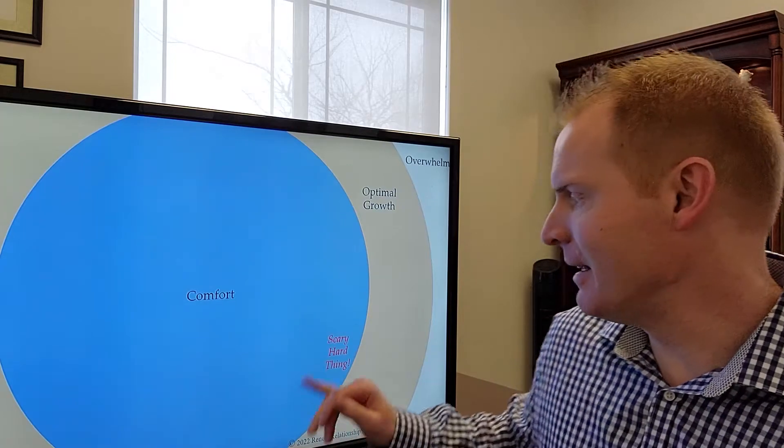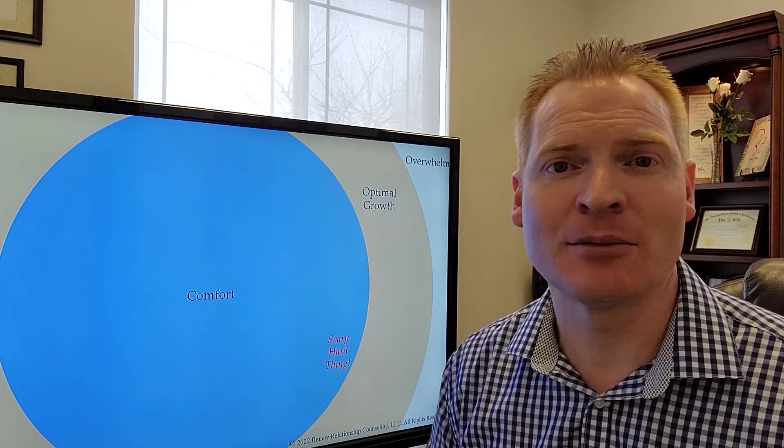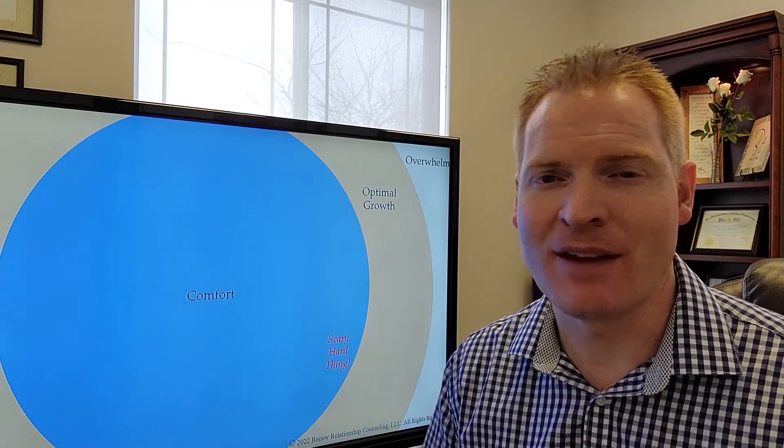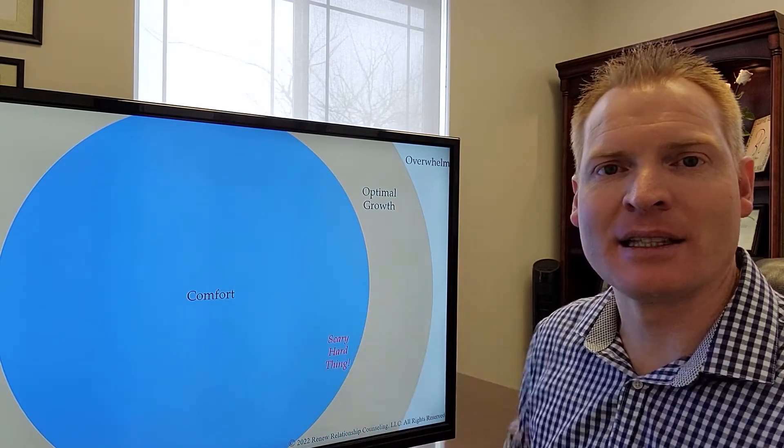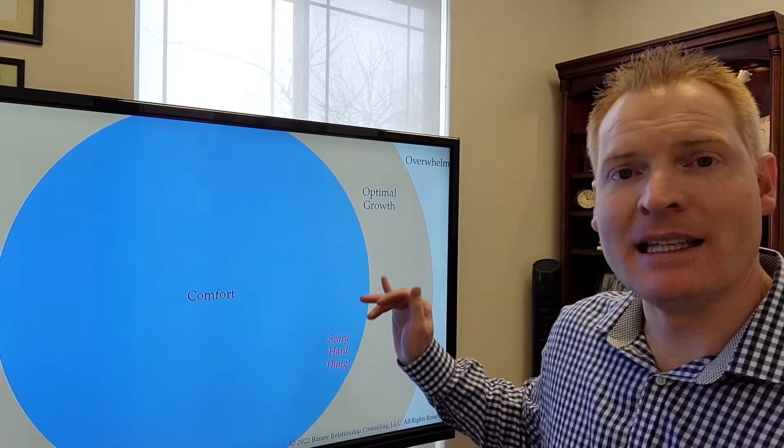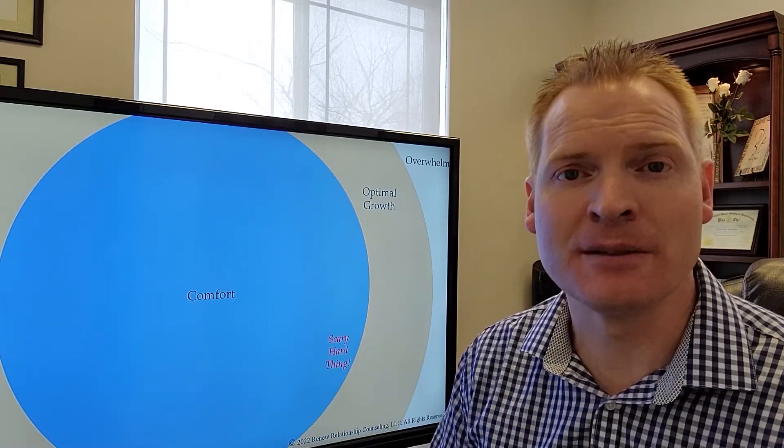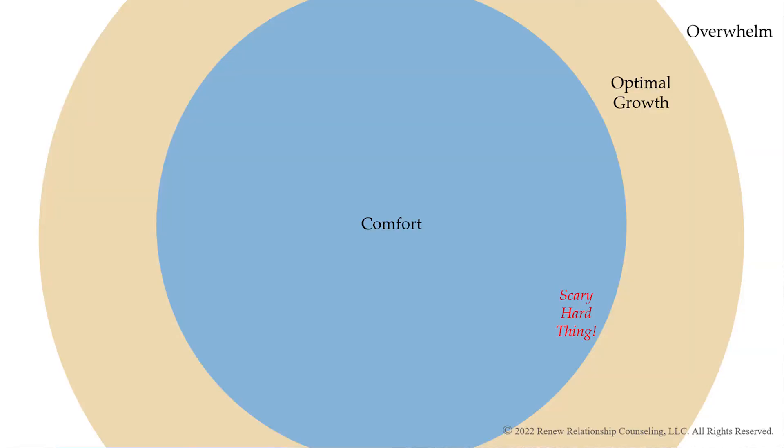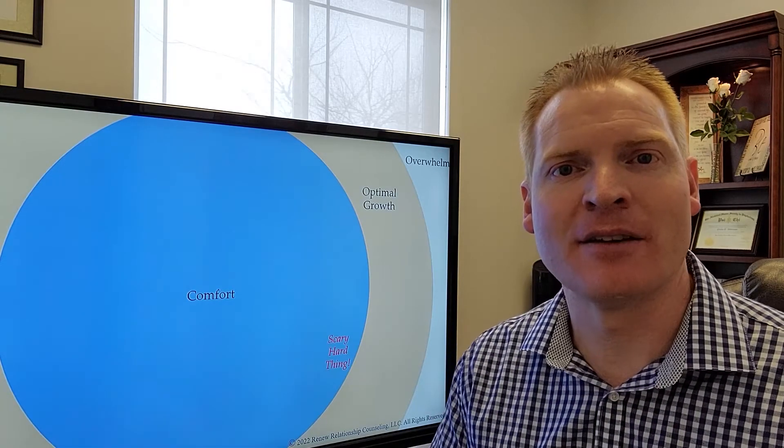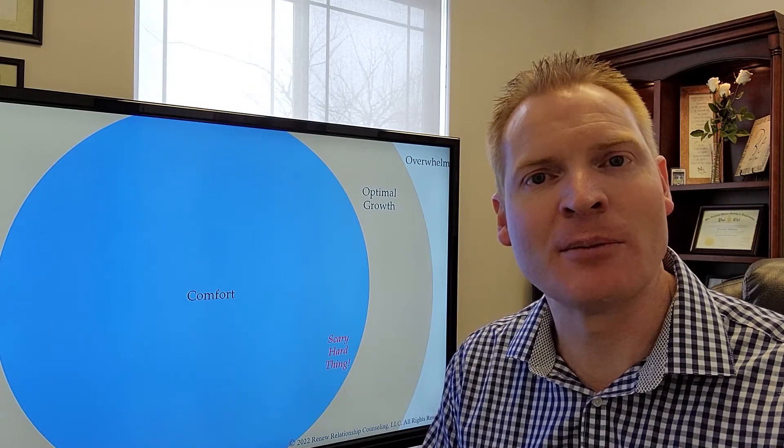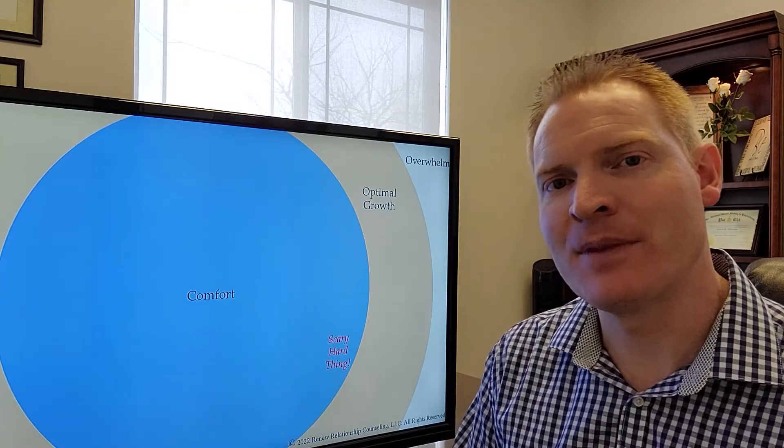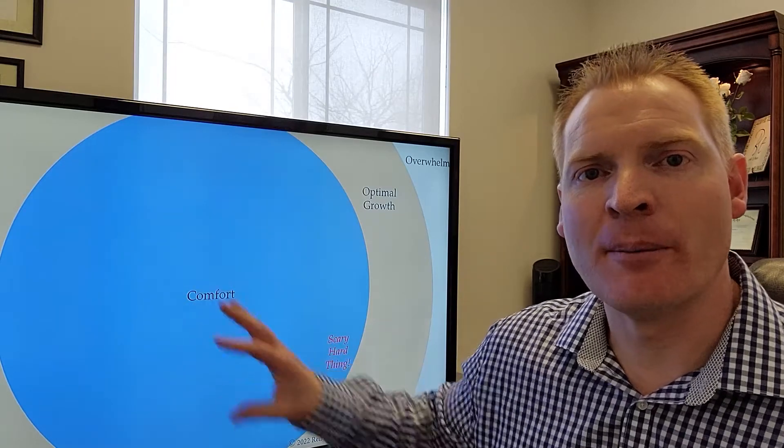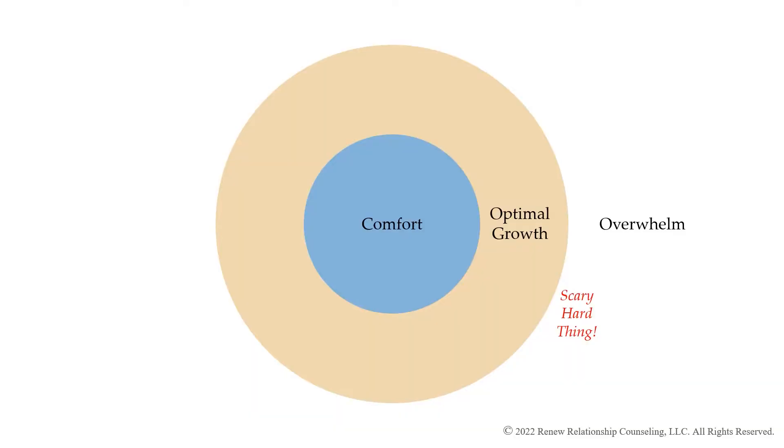And what you're noticing is happening is that now this scary hard thing that at the beginning of the relationship, he wasn't able to do at all. He just hadn't practiced it. His family didn't operate that at all previous to his marriage. Pretty soon that scary hard thing has gone from being something that's completely overwhelming to him, to something that he could do with a little bit of challenge that pushed him, to something now that he can do comfortably. He's able to do that in his relationship with his wife comfortably. And it's because he's been pushing himself into this place, just like exercising.